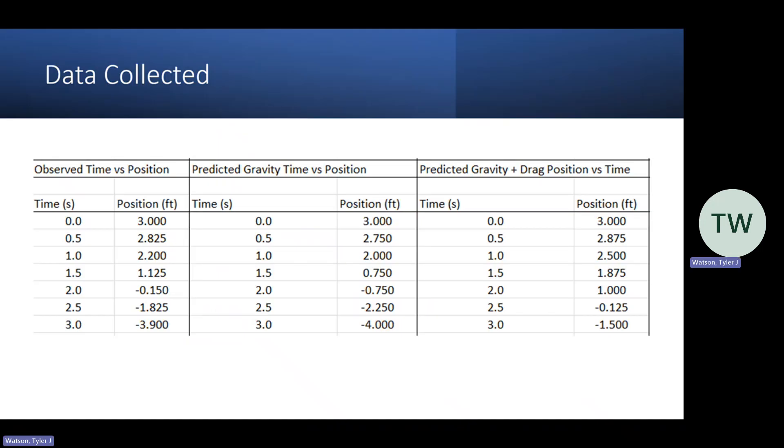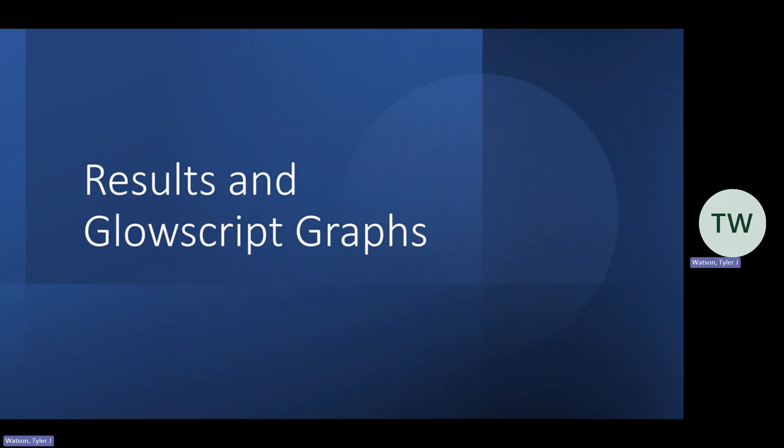This was the data that we collected for each different computational model. As you can see all the way on the left, this was our actual observed time versus position graph. In the middle, you can see our predicted gravity time versus position. As well as on the right, you can see our predicted gravity and drag position versus time. And this will all be shown in our GlowScript graphs.